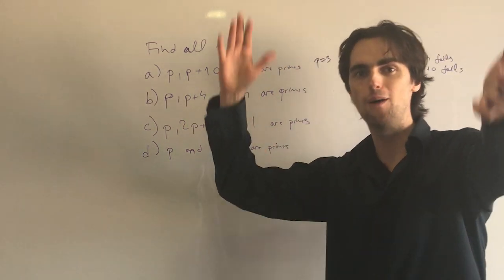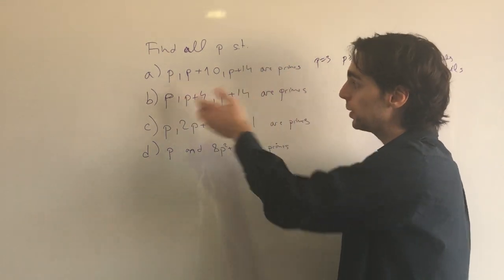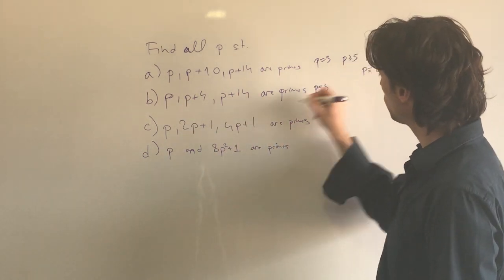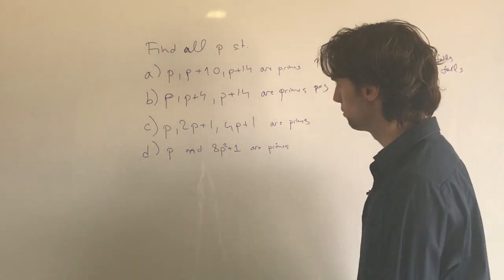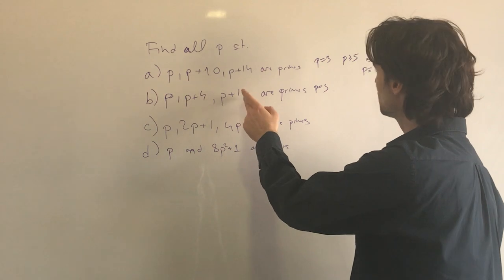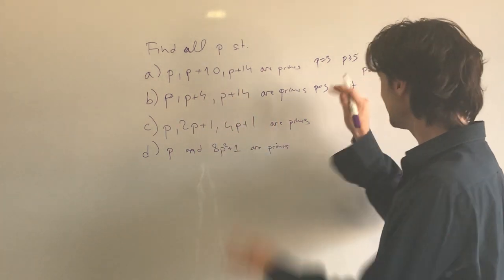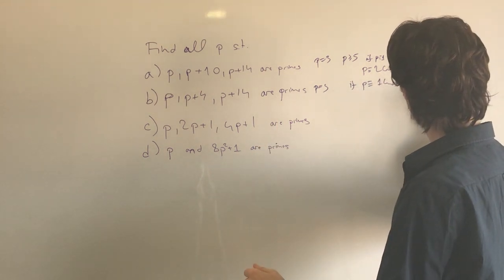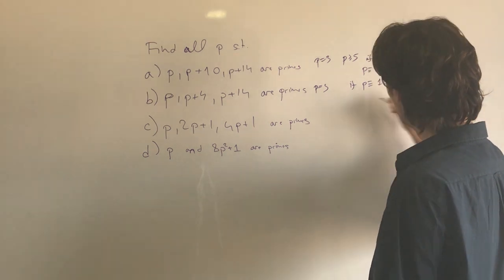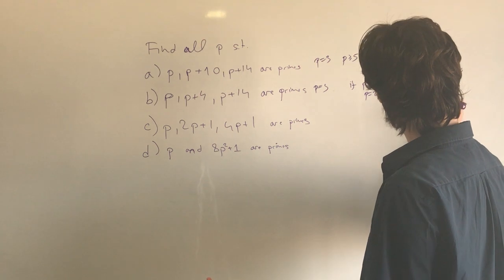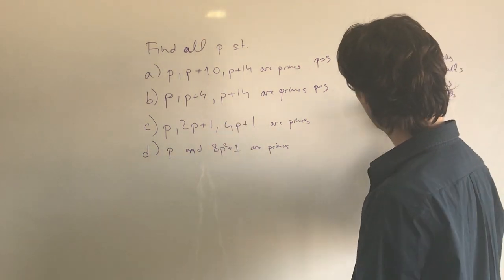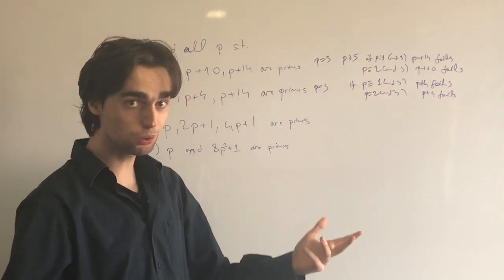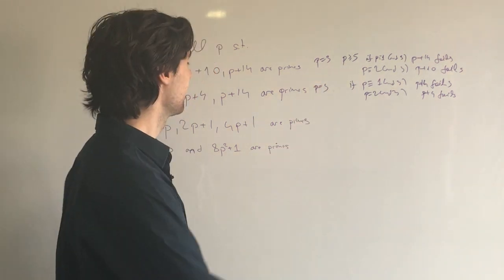Now let's solve part B. P equals 2 doesn't work due to evenness. P equals 3 gives 3, 7, 17 — all prime, so P equals 3 works. Similarly, if P is congruent to 1 modulo 3, then P plus 14 fails. If P is congruent to 2 modulo 3, then P plus 4 fails. In either case, if P is not equal to 3, one of the expressions is divisible by 3, and we're done.